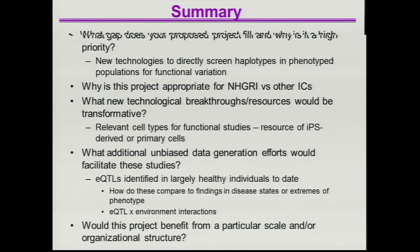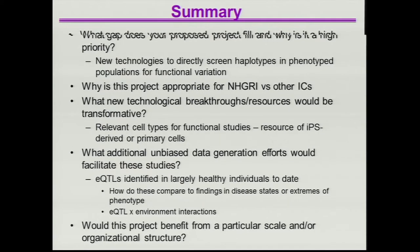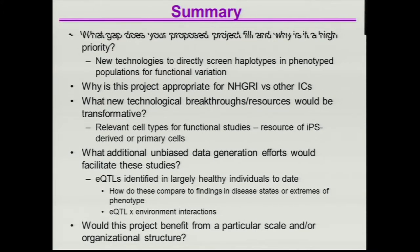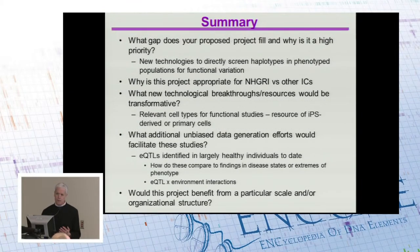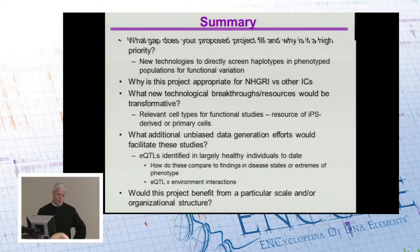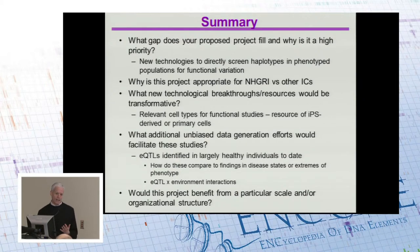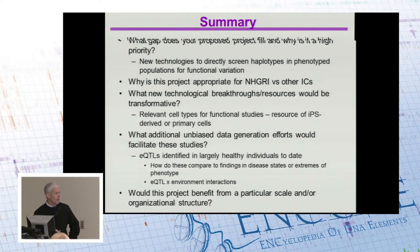In conclusion, one of the ideas is that this could be done in a disease-agnostic way: developing new technologies that allow for more rapid screening of functional variants is something appropriate for NHGRI. Using those technologies to identify functional variation may be done more appropriately as it relates to specific phenotypes, but the technologies could be developed in a more disease-agnostic way.